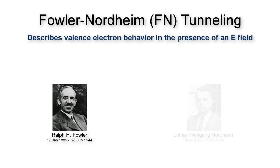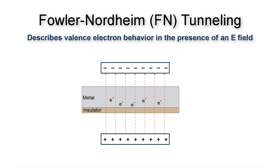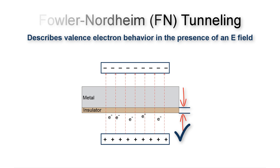Ralph Fowler was the British physicist and Lothar Nordheim was the German physicist behind Fowler-Nordheim tunneling. Their mathematical explanation was published about a century ago. The idea is that electrons placed in a very strong electric field can tunnel through a barrier in the direction of that field, if the barrier width is thin enough for the given electric field strength.